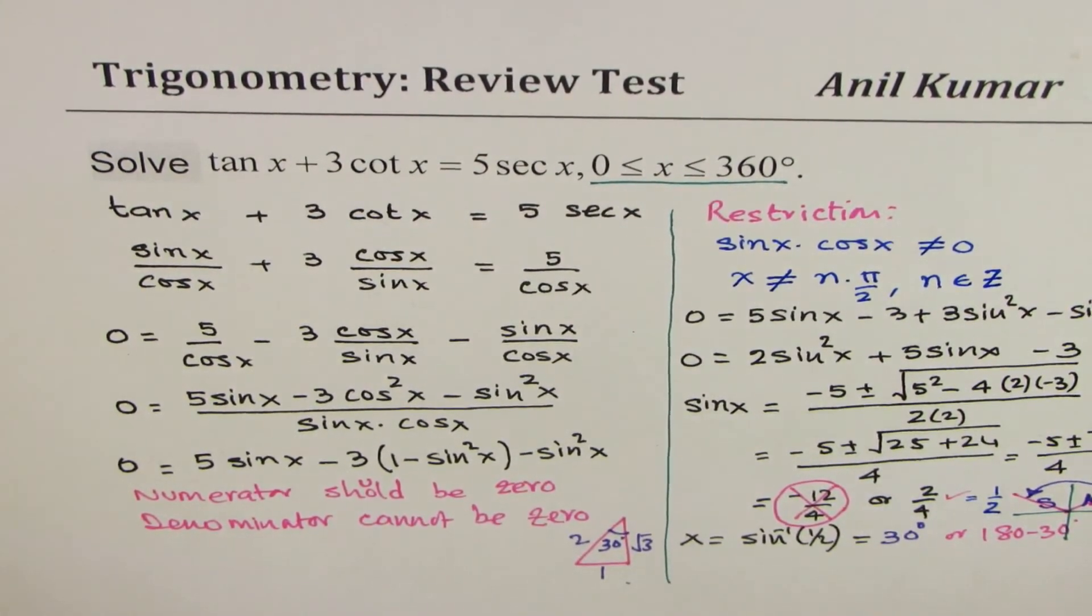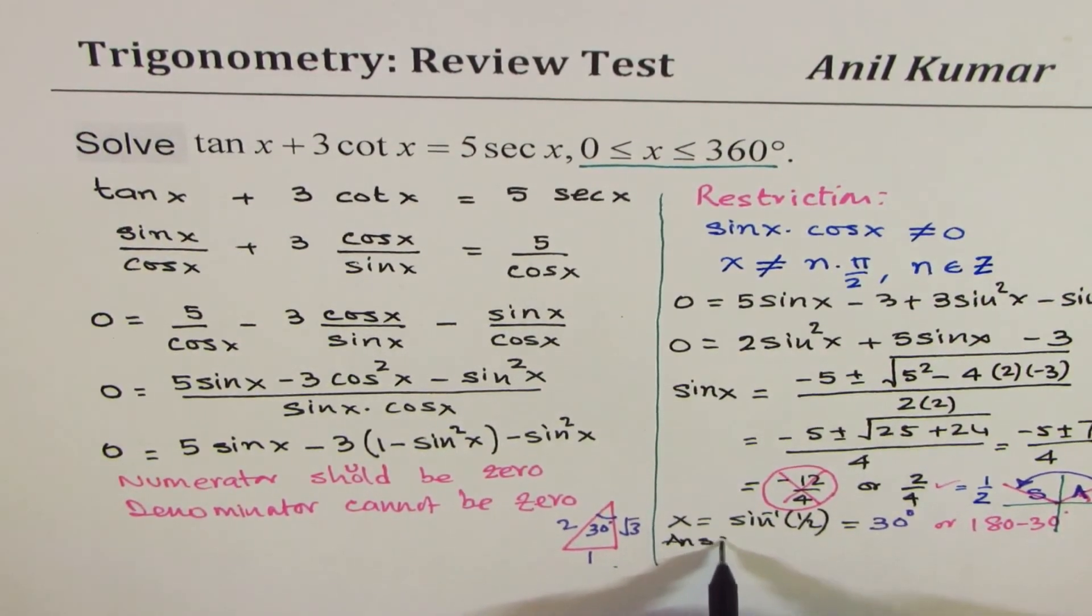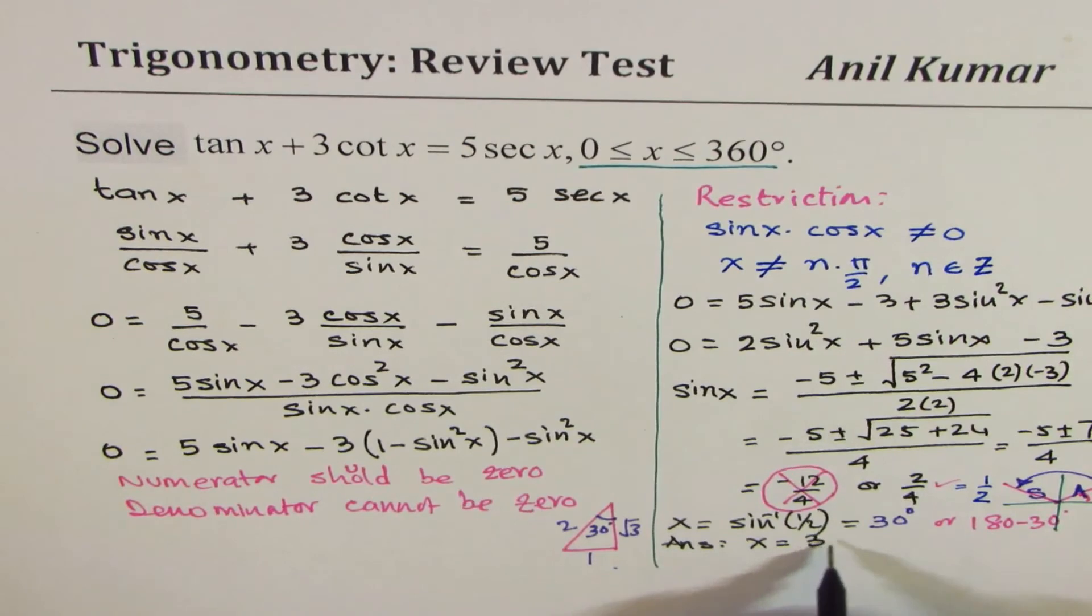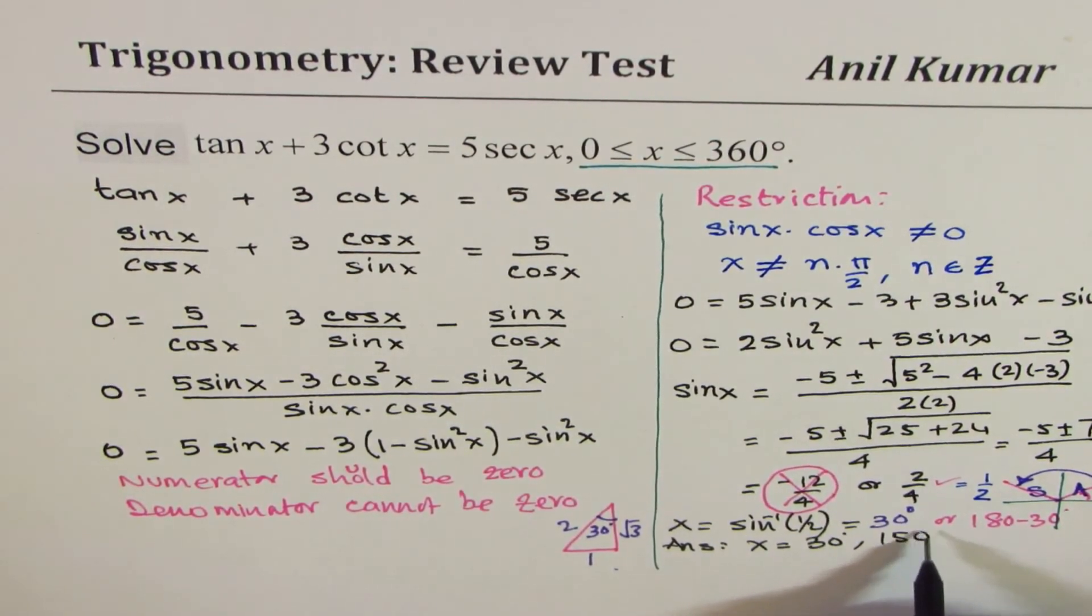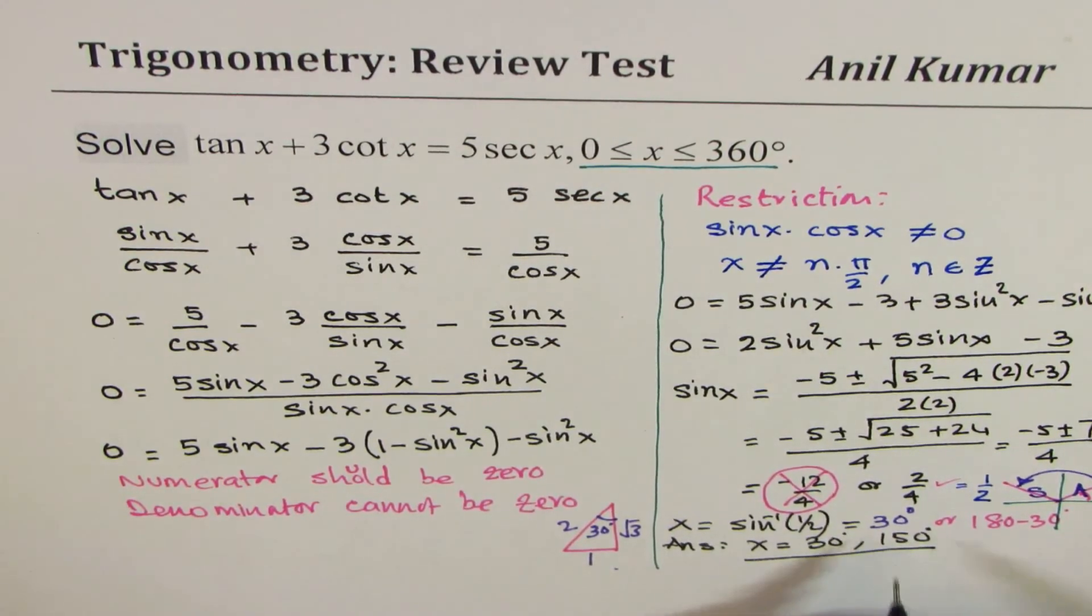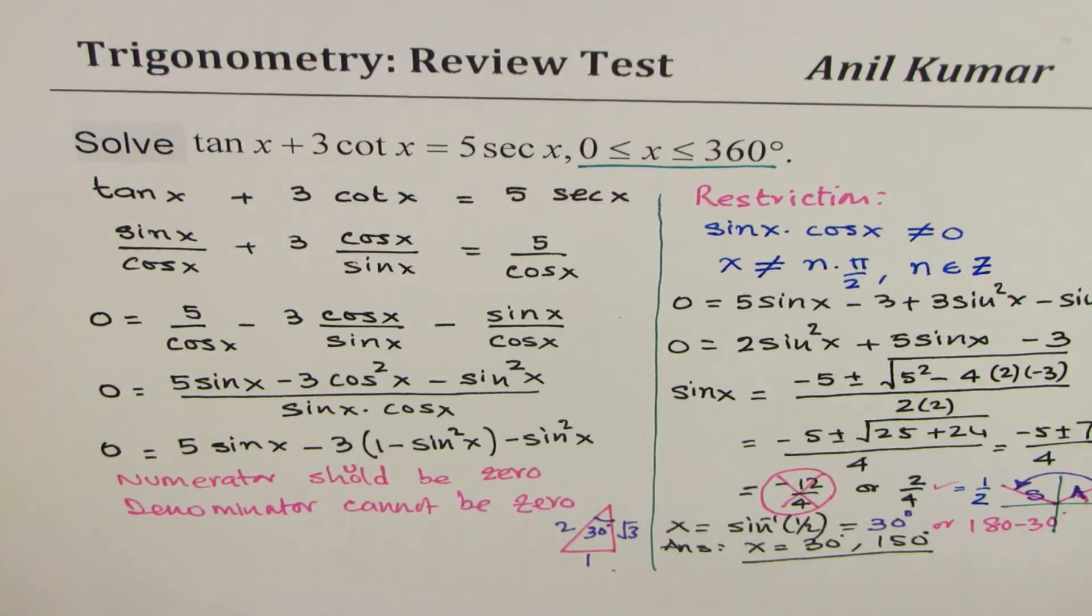So let me write down the answer here now. So the answer is that x is equal to 30 degrees, or 180 minus 30, which is 150 degrees. So we get two solutions for the given equation. You can always substitute these in the equation and verify your result.